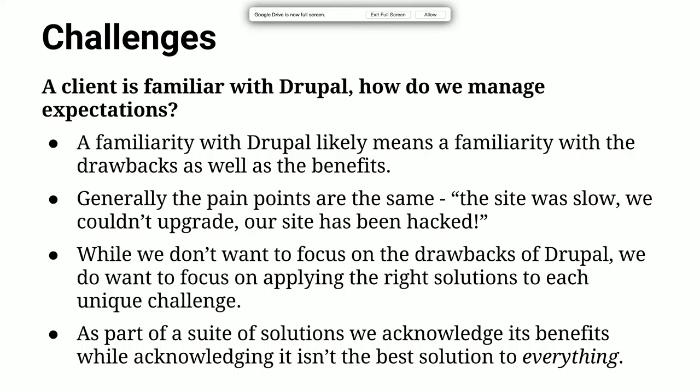So, some questions that have come up when talking to clients. We have a client that's familiar with Drupal — they have expectations about what a Drupal site is, how it works, what it looks like. How do we manage that in a decoupled system? Familiarity with Drupal likely means familiarity with both its drawbacks and benefits. We know the pain points: the site was slow, we couldn't upgrade, it got hacked. We don't want to go to clients and tell them Drupal sucks, but we want to focus on applying the right solutions. We want to identify tangible solutions, and if it makes sense to use Drupal, we use it — rather than deciding Drupal is the de facto solution for everything. The key is transparency and encouraging clients to try different things.